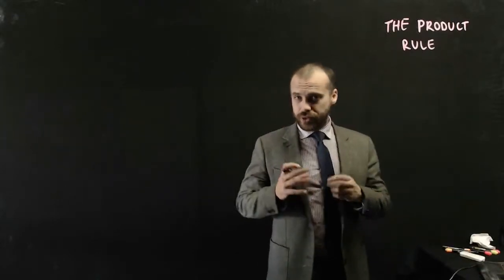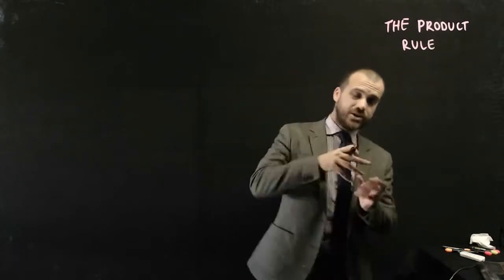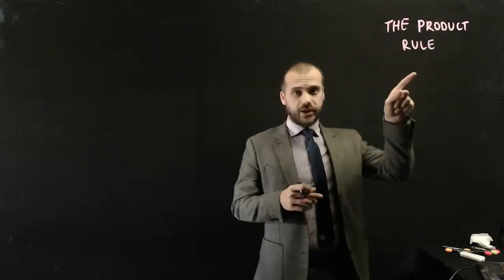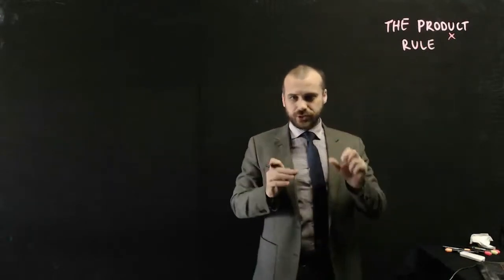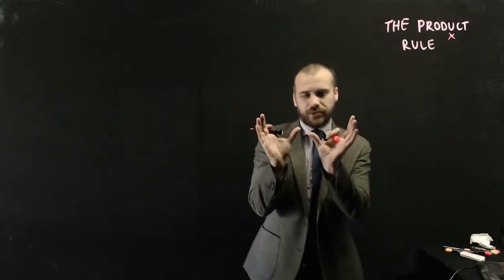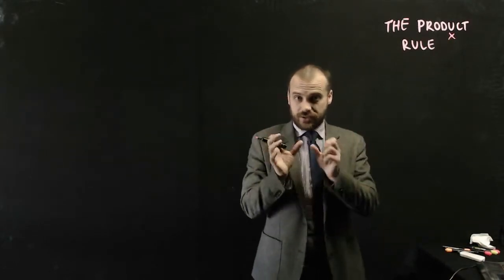So this one's about the product rule. Now you've already learned the chain rule, which is where you find the derivative of a function inside of a function. Now the product rule - the word product means multiply - so the product rule is where you have a function multiplied by another function, and then we find the derivative of that new function.